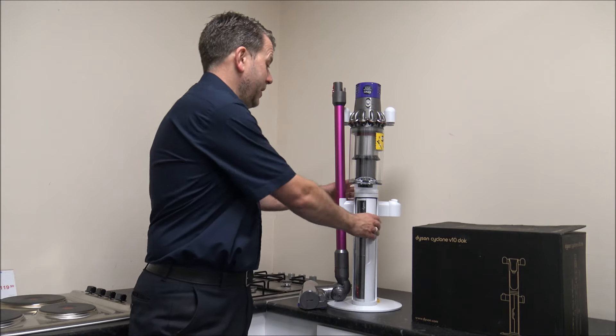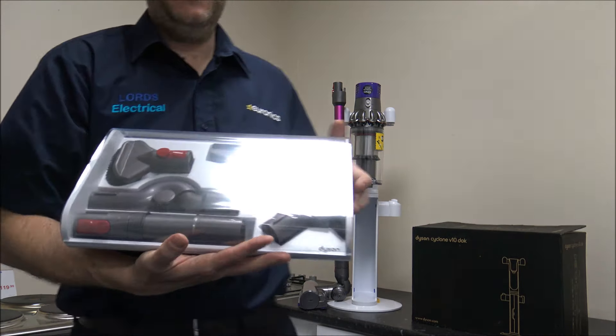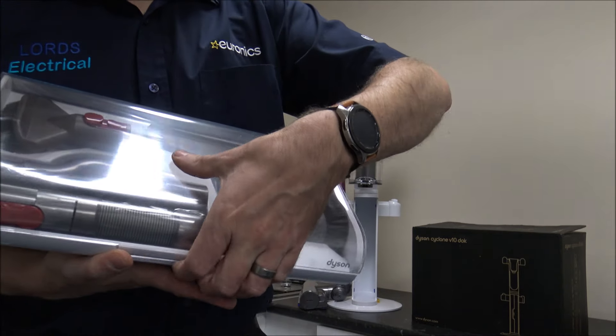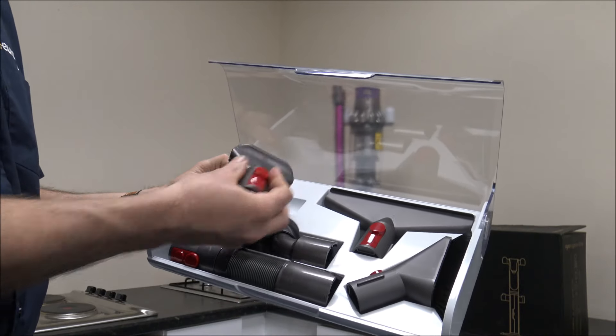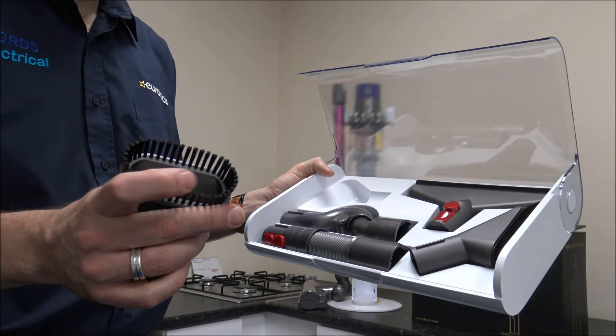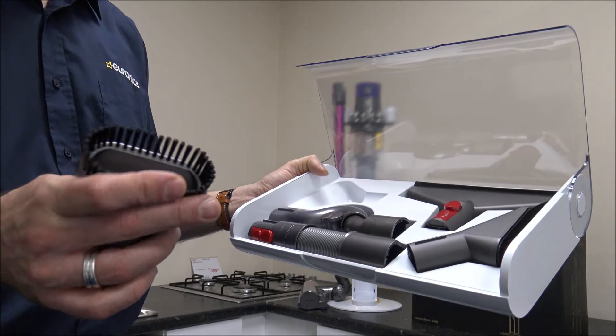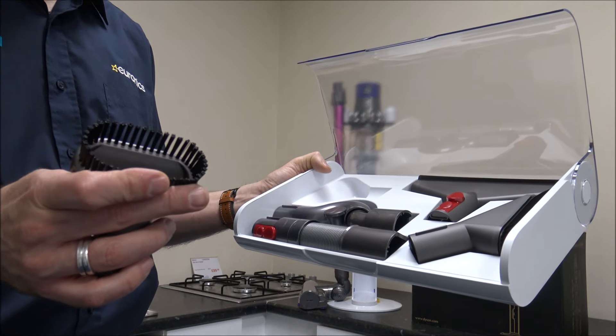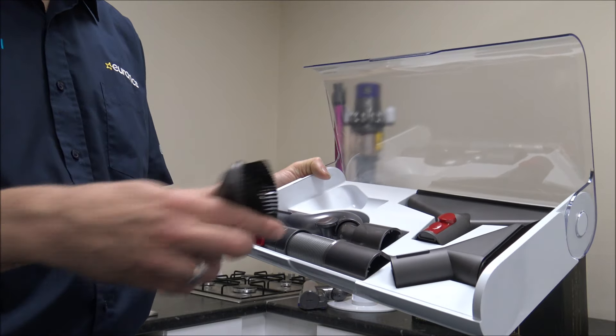What the V10 dock also comes with is this. It comes with an array of tools as well. This first one is the stubborn dirt brush. That's normally a really good brush. So if you've got things like dry muddy footprints, if you've got kids, then you'll know what I mean. Dry muddy footprints on the carpet. That's a really good one to get it up.